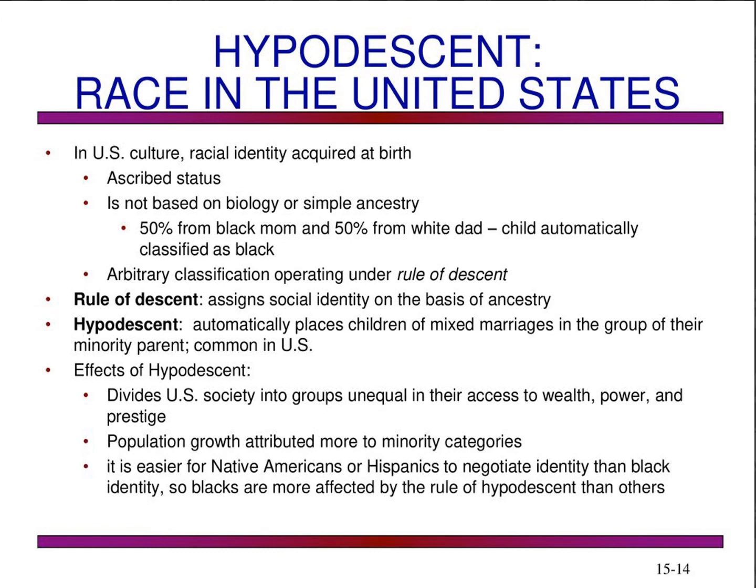During Marvin Harris's time — primarily the 1950s, 60s, and 70s — racial identity in US culture was acquired at birth as an ascribed status you cannot change, not based on biology or simple ancestry. If 50% of a child's DNA comes from an African American mother and 50% from a Caucasian father, the child is automatically classified as black in the American system. This is an arbitrary classification system operating under a rule of descent that assigns social identity based on ancestry.